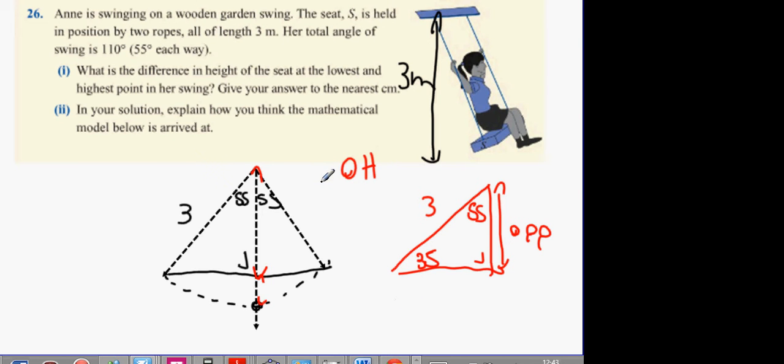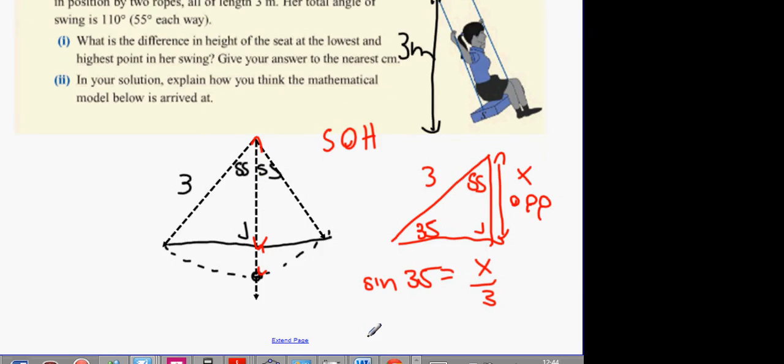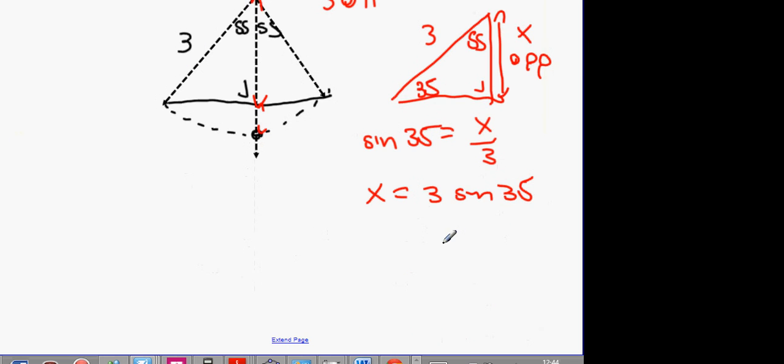So, what function do I use? Sin. Sin 35 equals, opposite, that we'll call x, x over 3. Cross multiply. x equals 3 sine 35. What's 3 sine 35? 1.72. 1.72 meters.